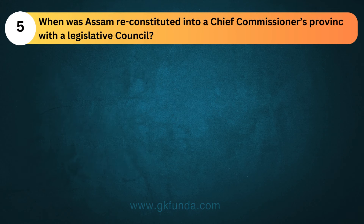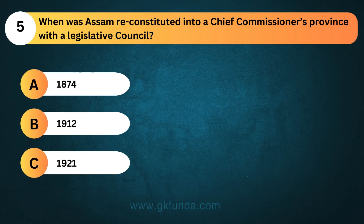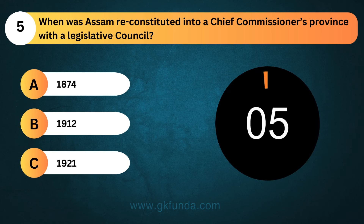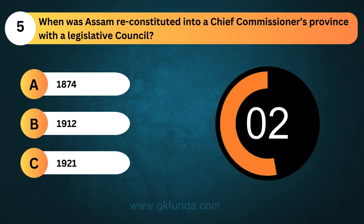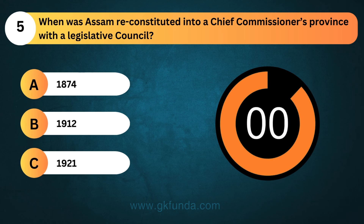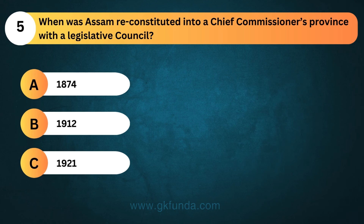When was Assam reconstituted into a Chief Commissioner's province with a legislative council? The answer is option B, 1912.